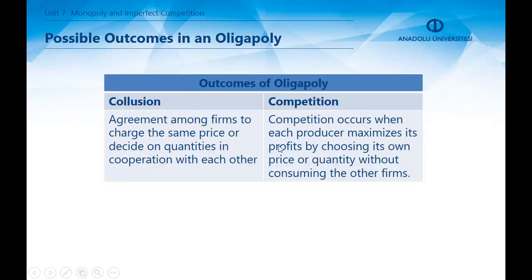In an oligopoly, each firm takes other firms' strategies as given and chooses the best response strategy — a strategy that maximizes the firm's profits given the strategies of other firms. There are two possible outcomes in an oligopoly. The first is collusion, which is an agreement among firms to charge the same price or decide on quantities cooperatively. The second is competition, where each producer maximizes its profits by independently choosing its own price or quantity.